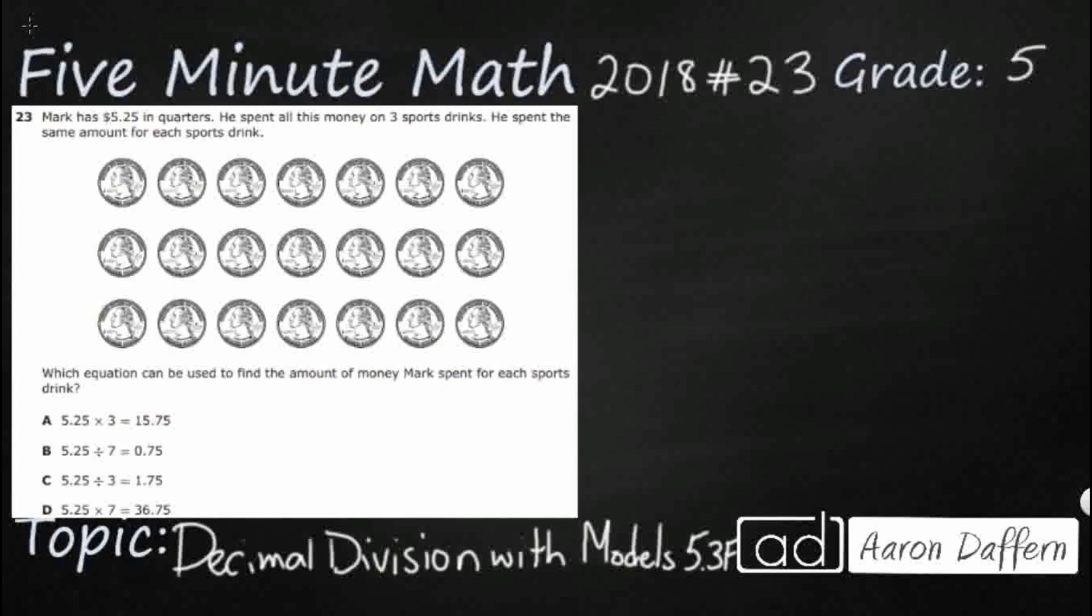So we have Mark, he's got $5.25 in quarters. He's going to spend his money on three sports drinks. Now there's a clue here. These sports drinks are the same amount for each. So we've got equal groups. Whenever we see words that lets us know we're dealing with equal groups, we're dealing with either multiplication or division because those are really important for equal groups.